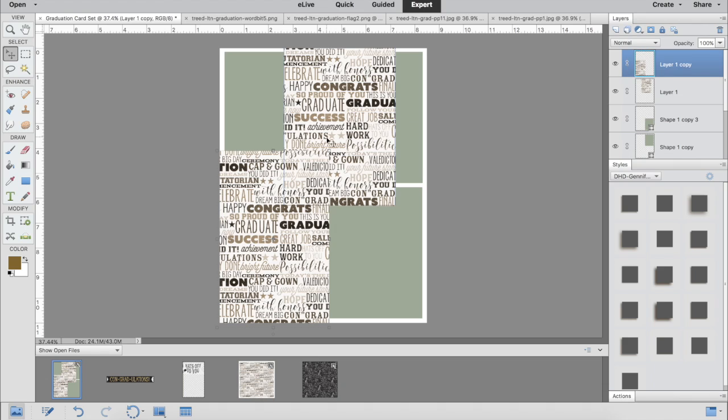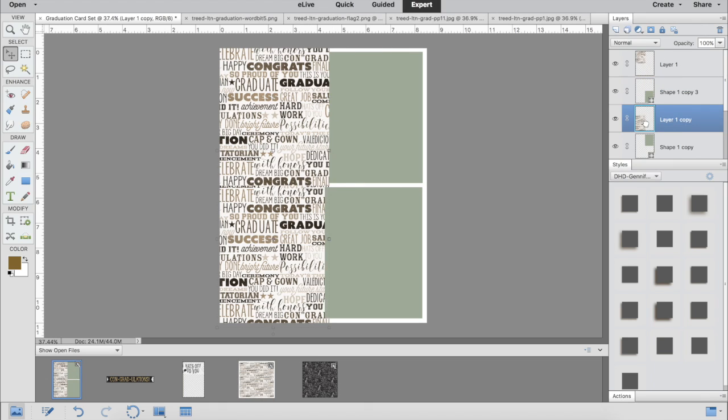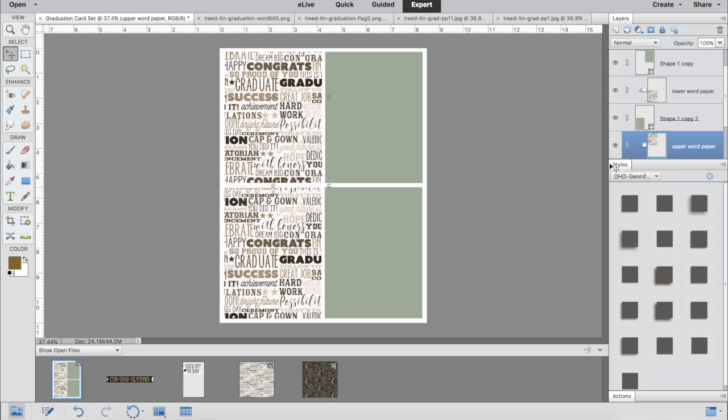I'm going to clip those into the rectangles that they're over. I'm going to move them over those individual rectangles in the layer stack and clip each one into their individual rectangles by doing Command or Control G.